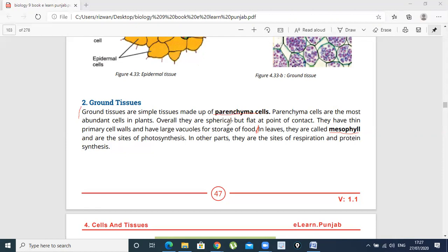Overall, if we are talking about the structure, ground tissue is spherical. But at the point of contact, where these two cells meet, they get flat.